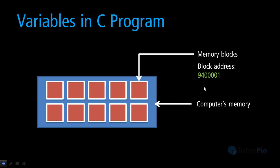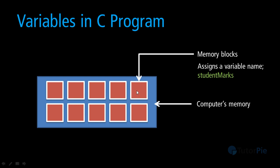As humans it will be difficult for us to remember this number when we need to deal with this particular memory block. So therefore we use variables. Instead of using the memory block address, we can assign a variable name to that particular memory block. Here I have assigned the variable name 'student_marks' to that memory block, so in a C program instead of using 9400001 I can use the variable name 'student_marks'.